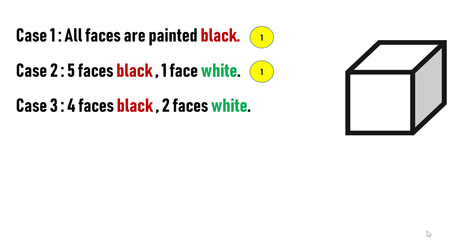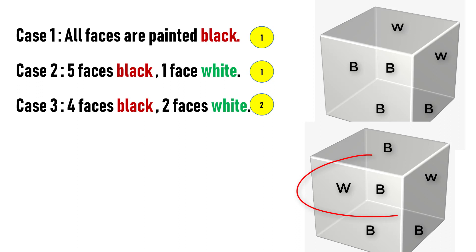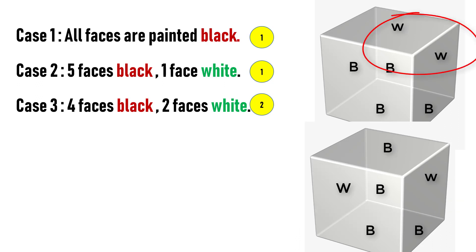In case three, let's assume four faces are painted black and two faces are painted white. In this case, there are two possibilities. The first is when the two white faces are on opposite faces. And the second is when the two white faces are on adjacent faces. If you paint two faces with white at any number of instances, there will be only two possibilities in the way it looks.